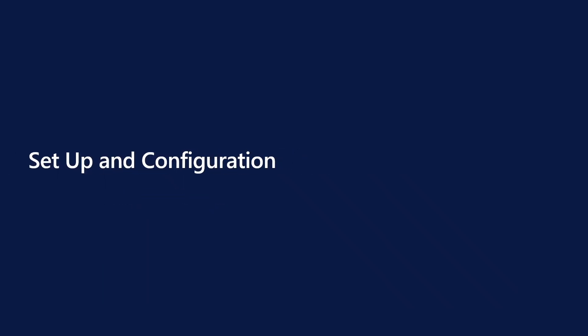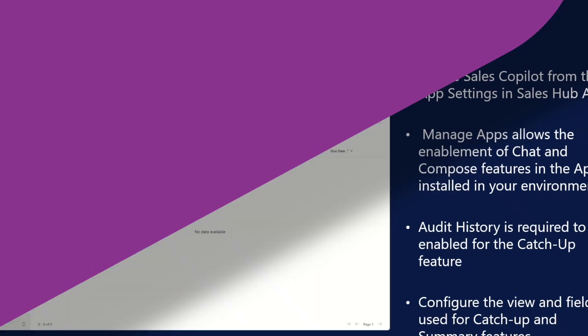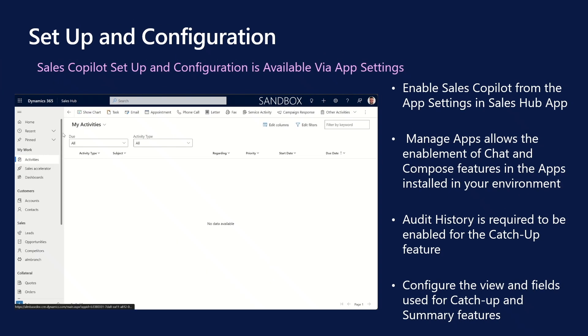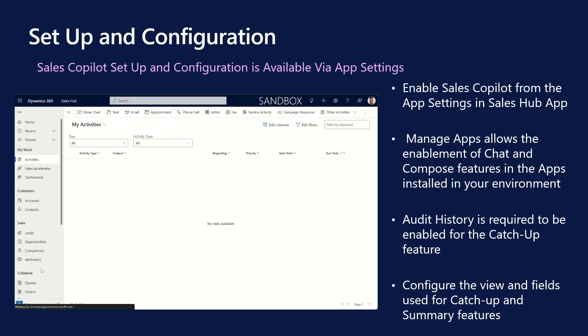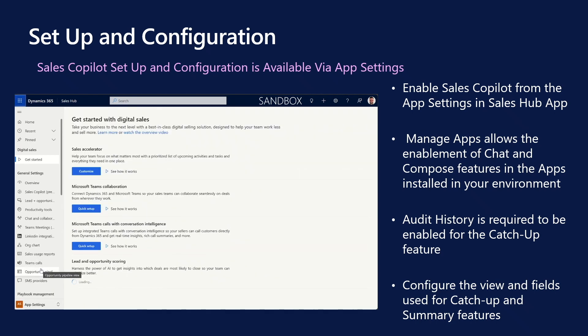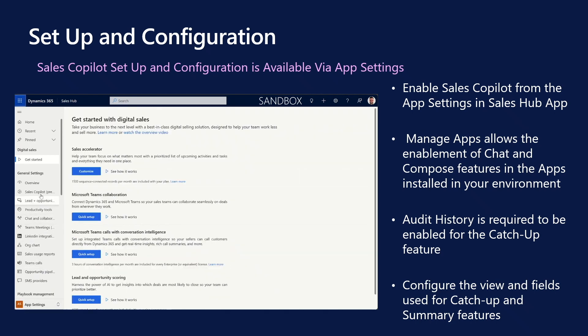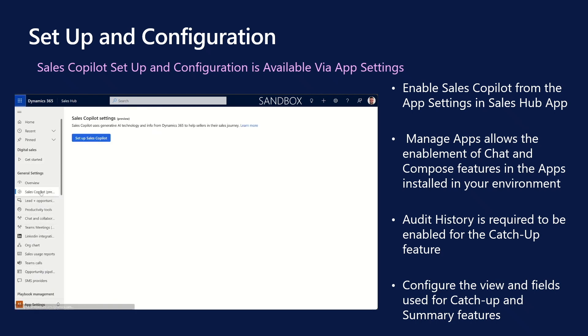Setup and configuration. You can enable Copilot from the Sales Hub app. If you're using a custom sales app, you need to switch to the Sales Hub and navigate to App Settings, select the Sales Copilot, and then select Setup Sales Copilot.